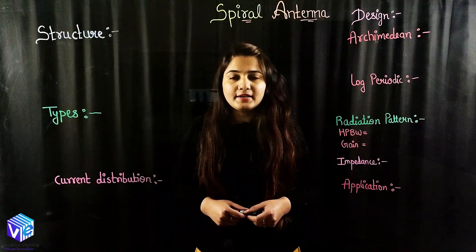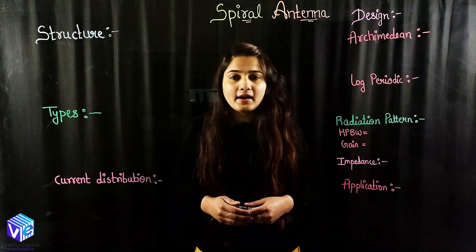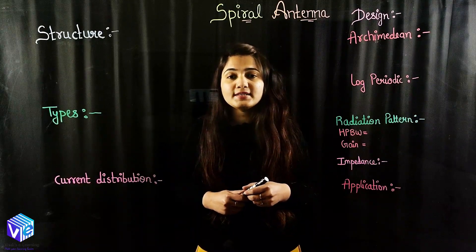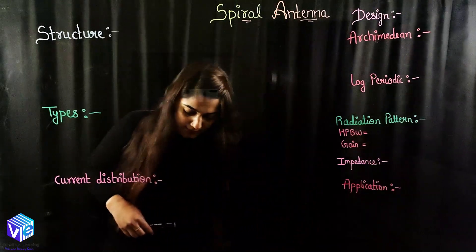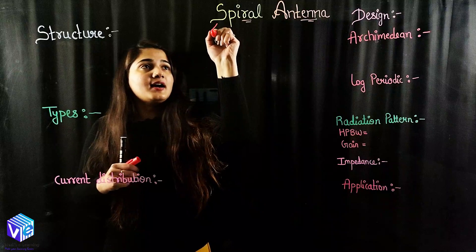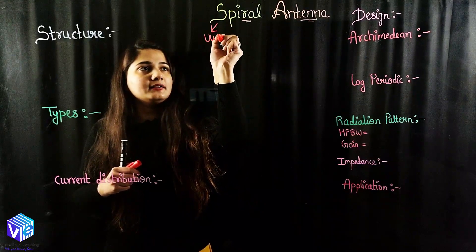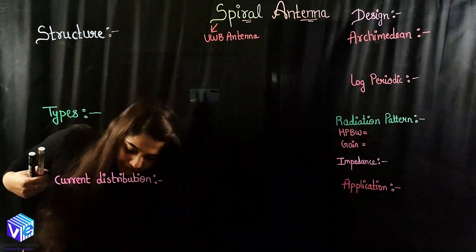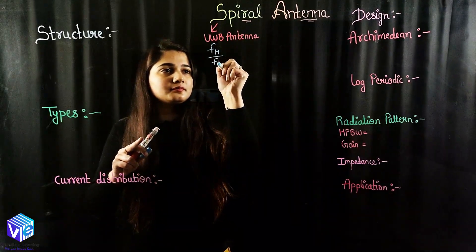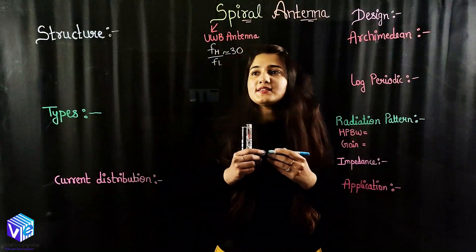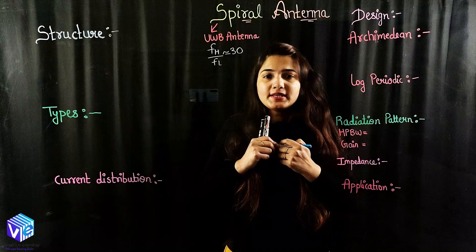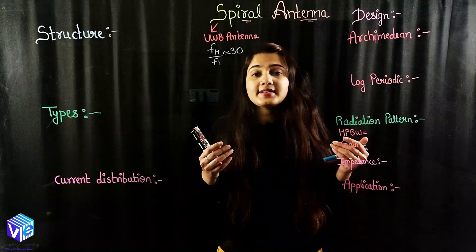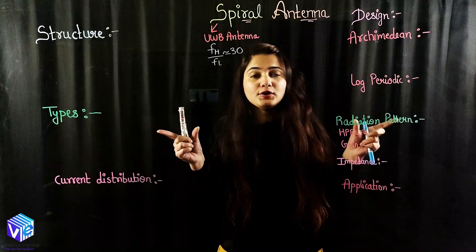So first of all, what is a spiral antenna? The spiral antenna is a wideband antenna, or I can say it is an ultra wideband (UWB) antenna. The highest frequency to the lowest frequency ratio is around 30. Which means that if I am operating on 1 GHz then I can equally operate on 30 GHz as well, so I have the operational range from 1 GHz to 30 GHz.